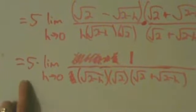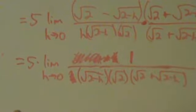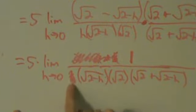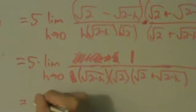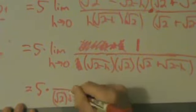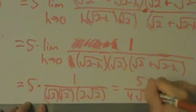So now we have 5 times the limit as h goes to 0 of 1 divided by root 2 minus h times root 2 times root 2 plus root 2 minus h. Because we canceled the h, we can now do direct substitution. That gives us 5 times 1 over root 2 minus 0, which is root 2, times root 2, times root 2 plus root 2 — which is 2 root 2. Root 2 times root 2 is 2, and 2 times 2 is 4. So bringing the 5 on top, that's 5 over 4 root 2.